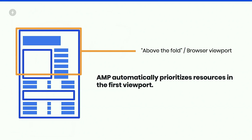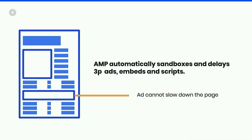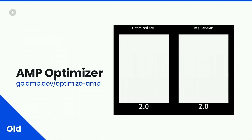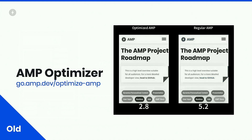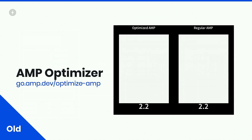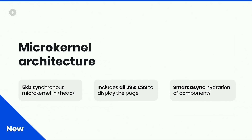AMP auto-sandboxes and delays third-party ads and scripts, so ads cannot slow down the page. We now have a new microkernel architecture — a five-kilobyte synchronous microkernel in the head that includes all JS and CSS to display the page, with smart asynchronous hydration of components after the fact. You get a stable layout even without an optimizer. We still have the optimizer for image optimization and machine-learning-based art direction, but you get a lot out of the box now.